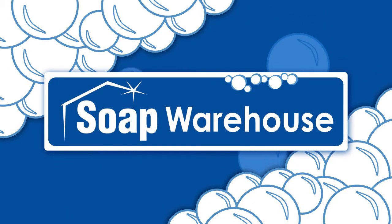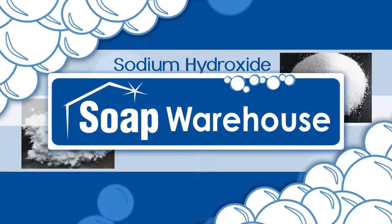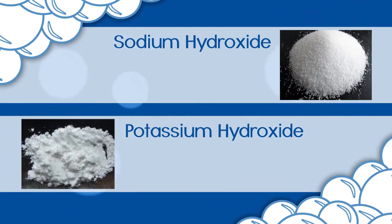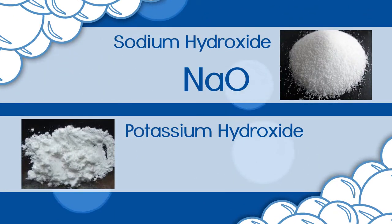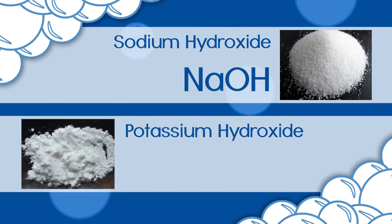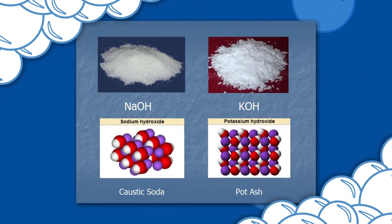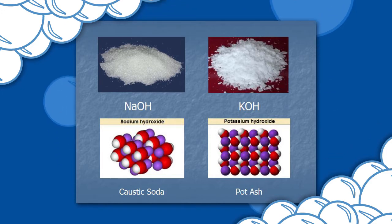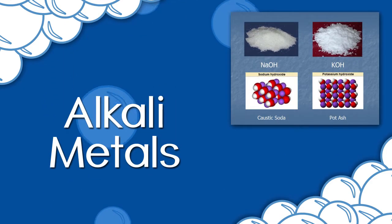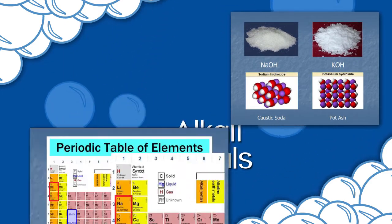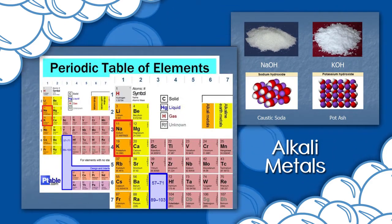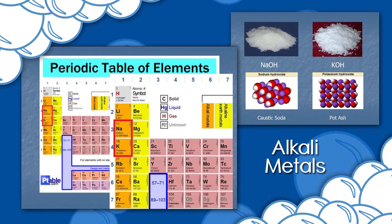Soap Warehouse would like to explain the differences between sodium hydroxide, NaOH, and potassium hydroxide, KOH, often referred to as caustic soda or lye and potash. They're both alkali metals, found close together on the periodic table.